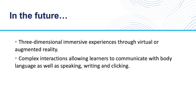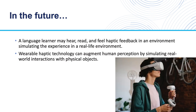Interactions will become more complex, allowing learners to communicate with body language as well as speaking, writing, and clicking. The type of feedback will also change in these environments — a language learner may hear, read, or feel haptic feedback in an environment simulating a real-life experience. For example, wearable haptic technology can augment human perception by simulating real-world interactions with physical objects.